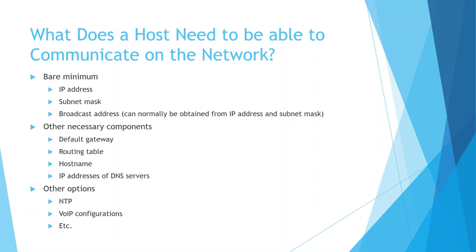From a bare minimum perspective, a host needs an IP address and a subnet mask, and they need a broadcast address. The broadcast address can normally be obtained from the IP address and subnet mask — this goes back to the lectures on IP addressing in weeks three and four. We would be able to derive the broadcast address from the IP address and subnet mask.